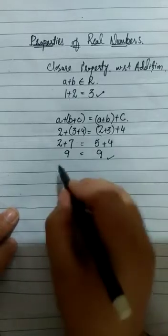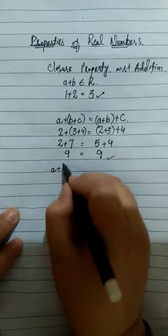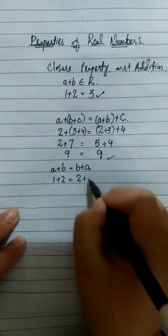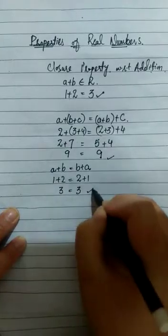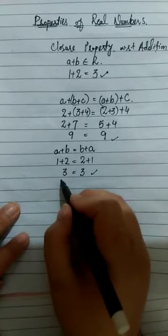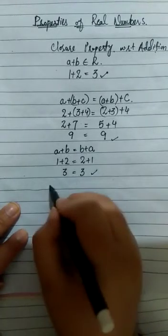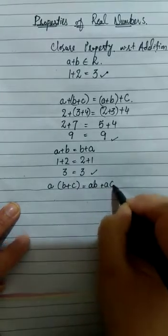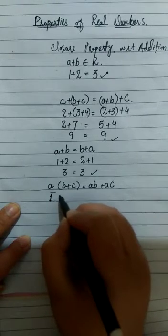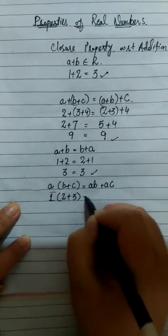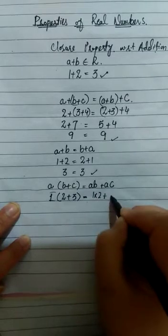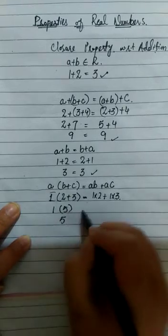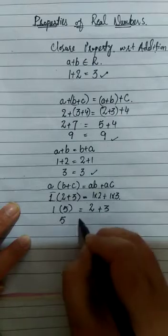Then we discussed the commutative property with respect to addition: a + b = b + a. For example, 1 + 2 = 2 + 1; in both cases 3 = 3, which is true. Then the distributive property of multiplication over addition states that a(b + c) = ab + ac. Like 1 × (2 + 3) = 1×2 + 1×3; both sides equal 5.